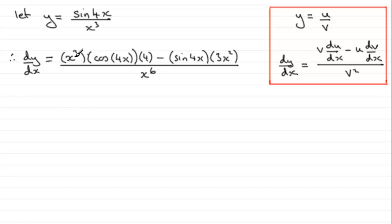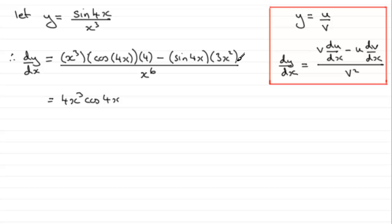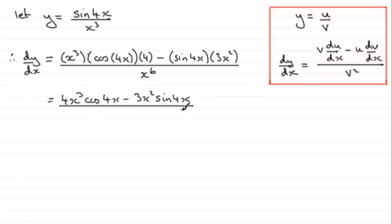Now I want to tidy up the top of the fraction. The first term is best written as 4x cubed·cos(4x), and the second term as 3x squared·sin(4x), so we have 4x cubed·cos(4x) minus 3x squared·sin(4x), all divided by x to the power 6.